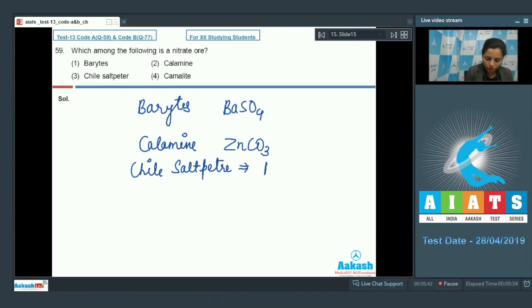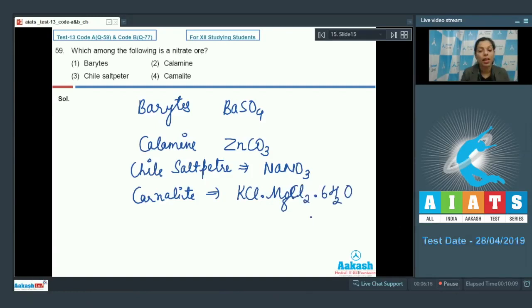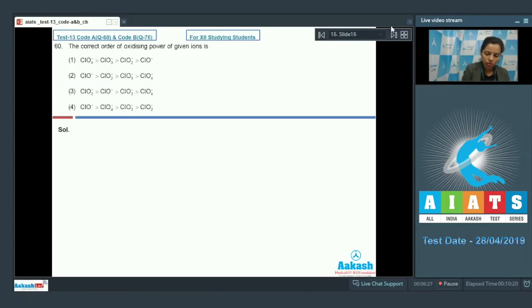That is sodium nitrate NaNO₃. Further, carnelite. That is KCl·MgCl₂·6H₂O. That is carnelite. So, only one nitrate ore is here. That is chili saltpeter. That's why option 3 becomes the correct answer.